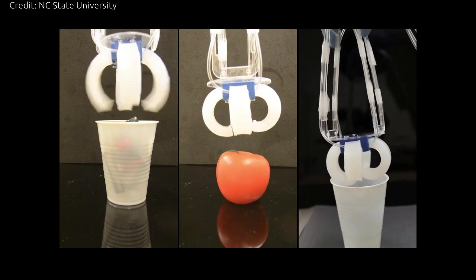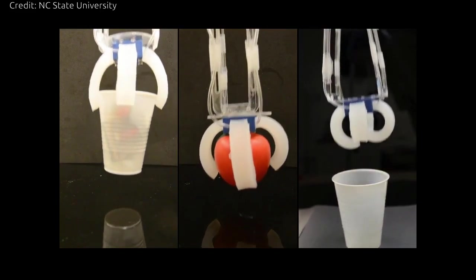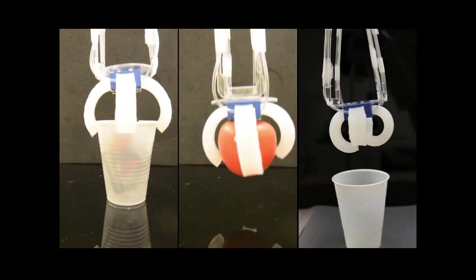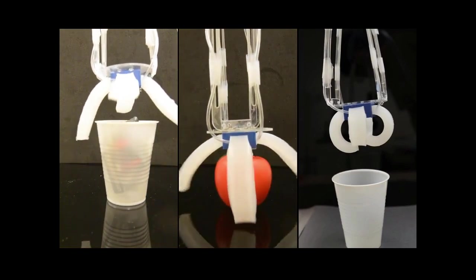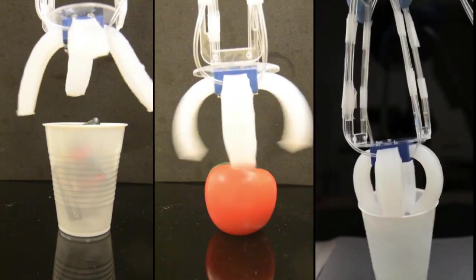Lastly, the researchers created a three-pronged gripping robot with a twist. Most grippers hang open when relaxed and require energy to hold onto their cargo as it is lifted and moved from point A to point B.